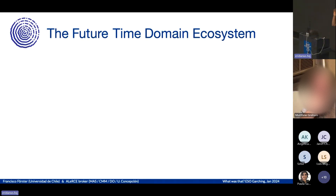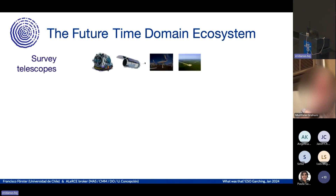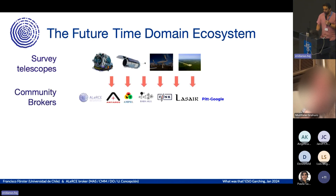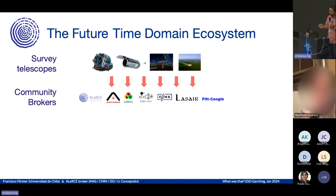I want you to imagine the future time domain ecosystem. We will have many survey telescopes from the ground, from space, using light, gravitational waves, and other messengers. They will be scanning the sky for things that are changing, and they will produce streams of notification alerts at large rates.